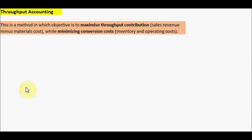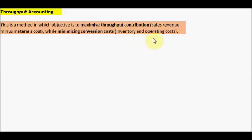Hey guys, this video contains an exercise on throughput accounting. First, look at what is throughput accounting. Basically, this is a method in which the objective is to maximize throughput contribution, which is sales revenue minus materials cost, while minimizing the conversion costs, such as inventory and operating costs.